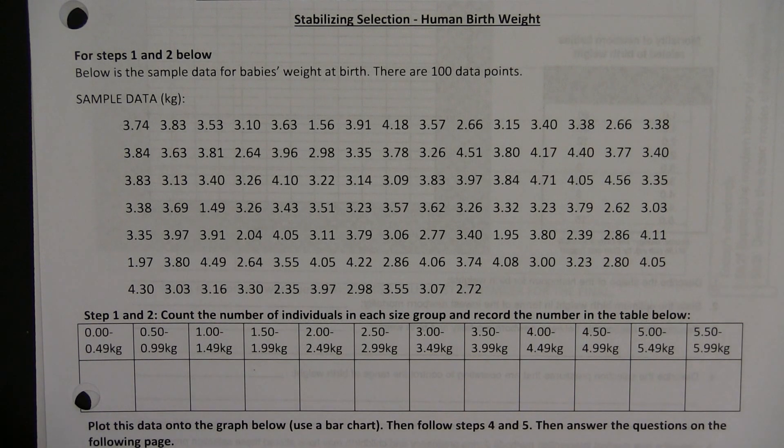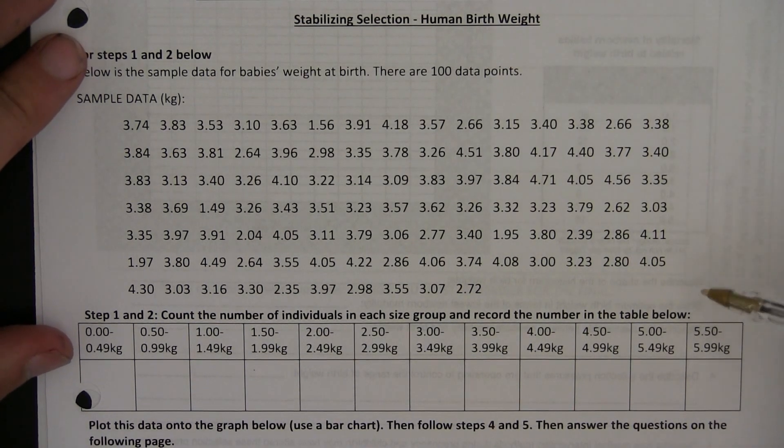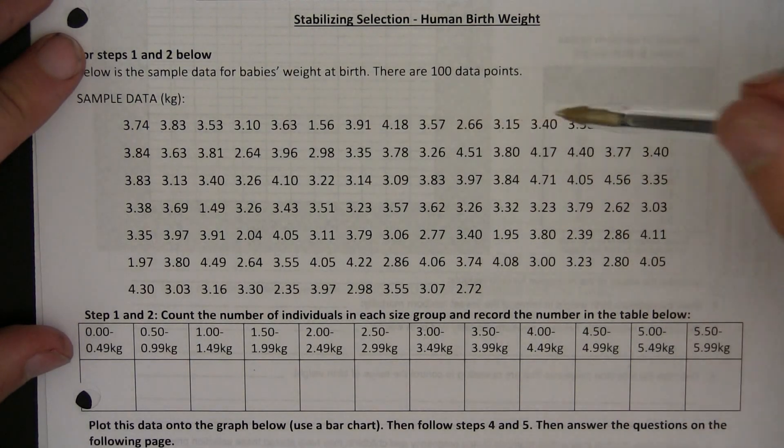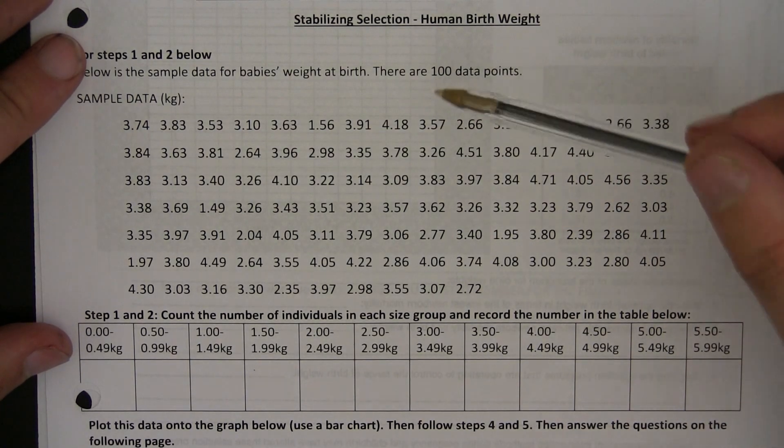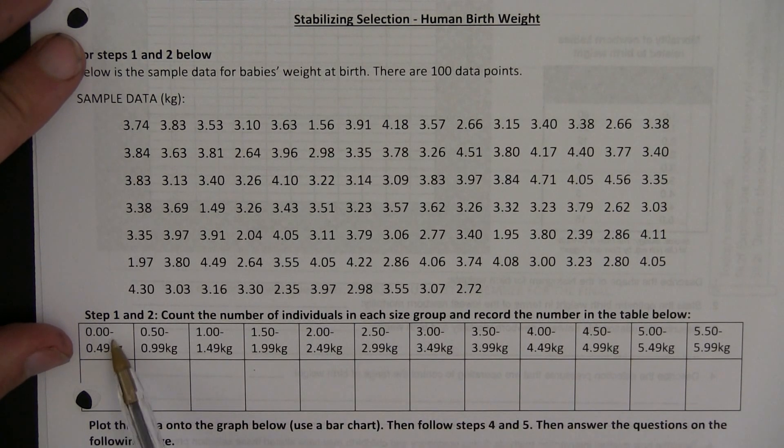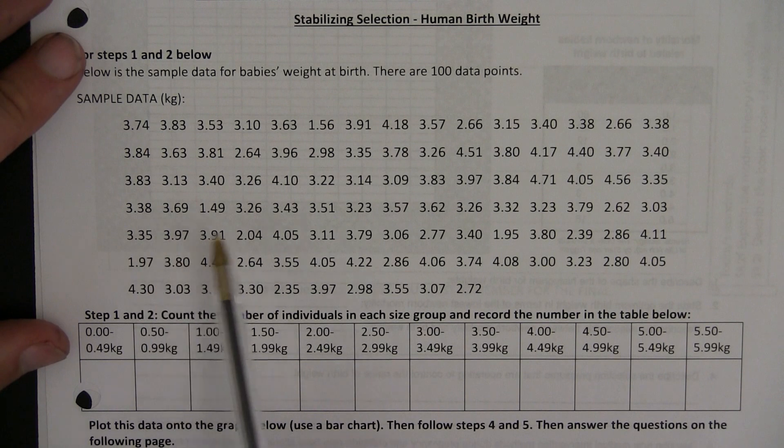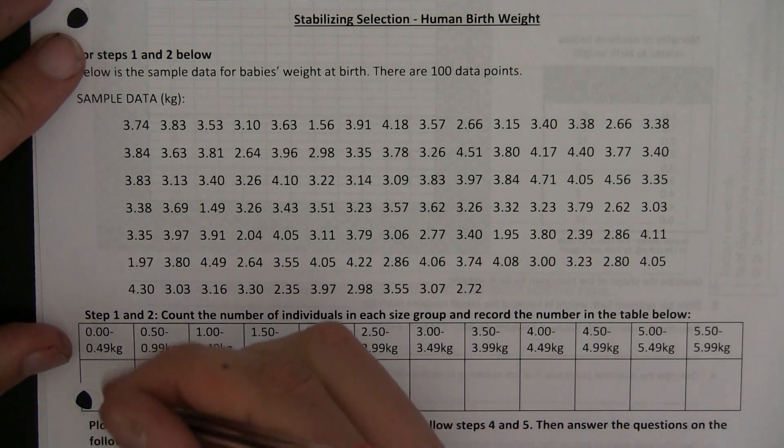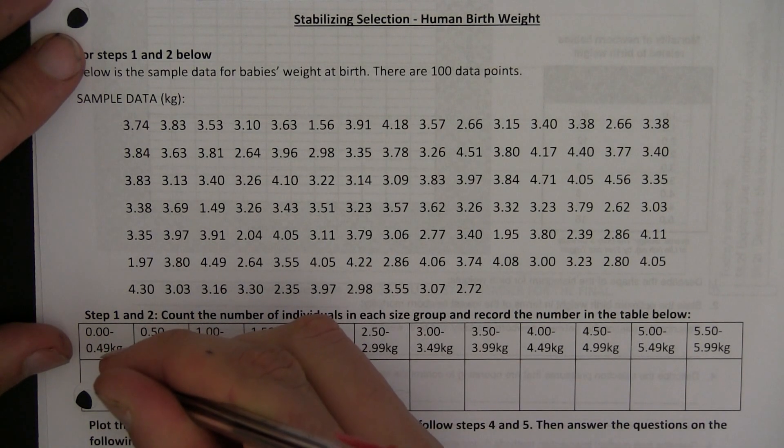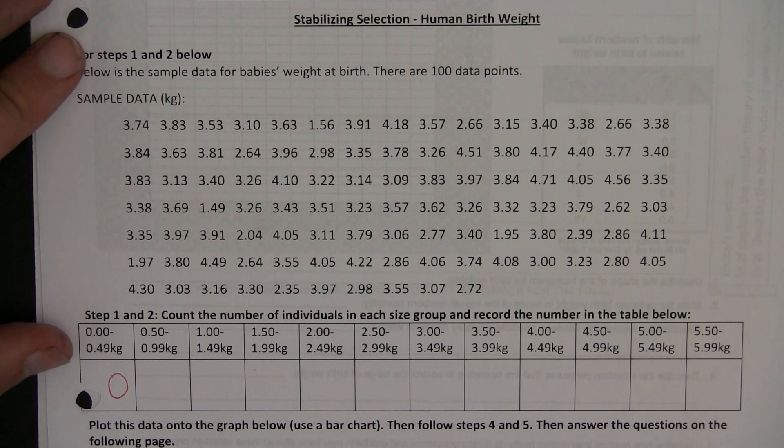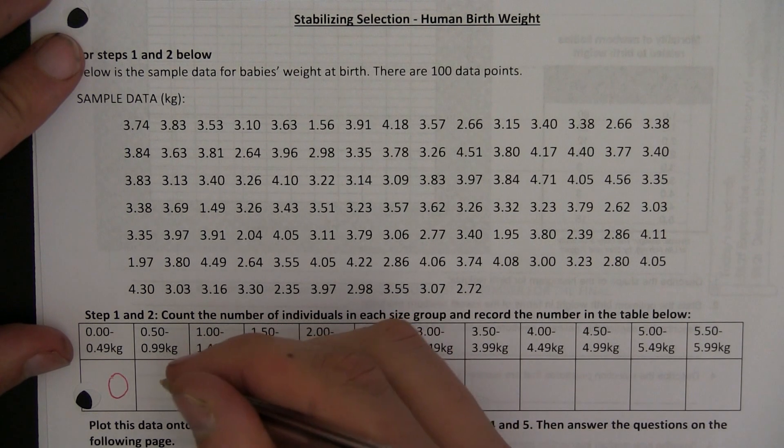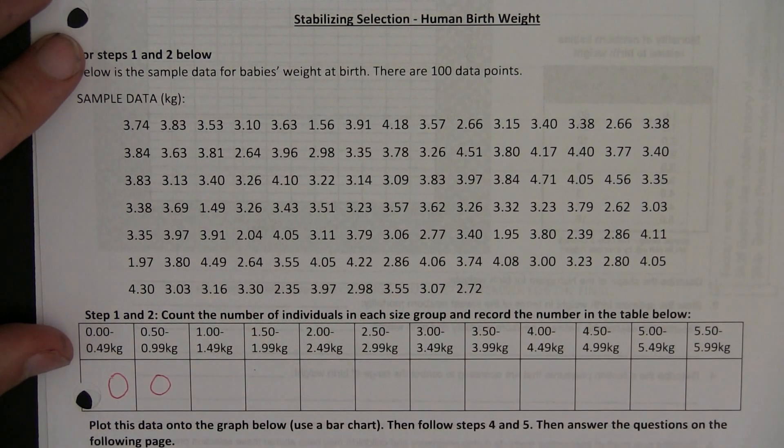So what I'm going to do is I'm going to go through this data set, crossing off any that I count as I go through. I can see that as I go through the first category, 0 to 0.49 kilograms, I look through all the data here, and I see that there's actually none in that category. There are no babies that were born in that weight category. There's also no babies that are born from 0.5 to 0.99 kilograms.